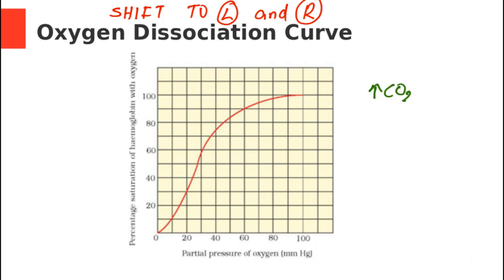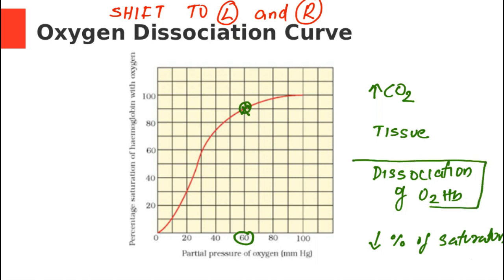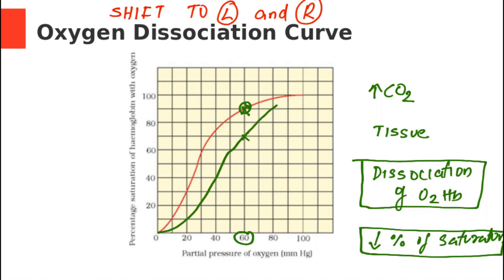In an experimental setup, I am increasing the carbon dioxide concentration. Carbon dioxide is normally high in the tissues. In the tissues, dissociation of oxyhemoglobin occurs, meaning there is a lowering of percentage saturation. At PO2 of 60, we can see dissociation occurring — saturation is reduced. The original graph is the red line, and this new graph is the green line, which is shifted to the right side. Shift to the right means a decrease in percentage saturation.